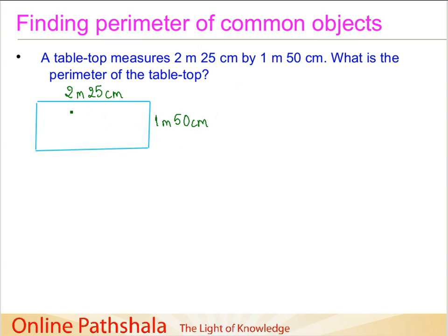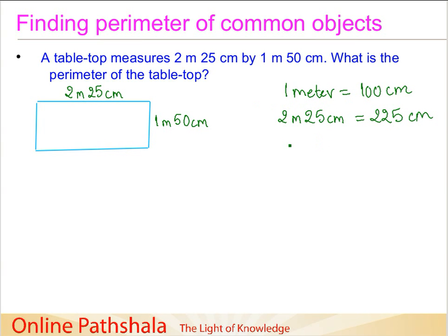There are two units given here, so first we need to convert them into a single unit. We can either convert to meters or centimeters. I prefer to convert to centimeters as it makes calculations easier. We know that 1 m equals 100 cm. So 2 m 25 cm becomes 200 + 25 = 225 cm. Similarly, 1 m 50 cm becomes 150 cm.